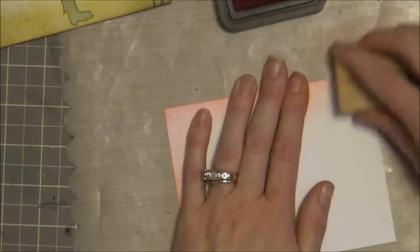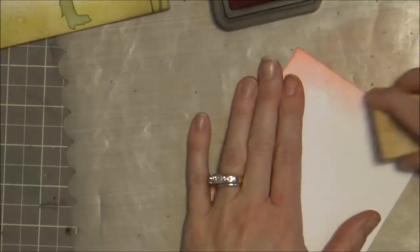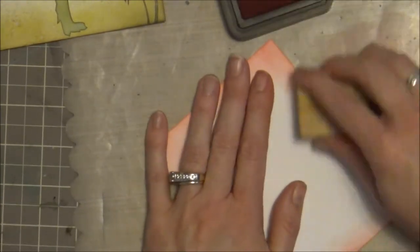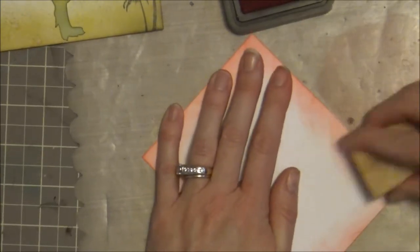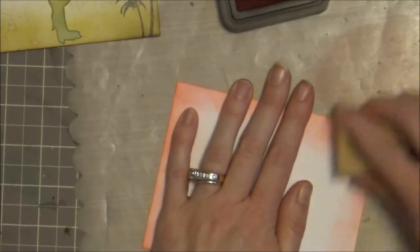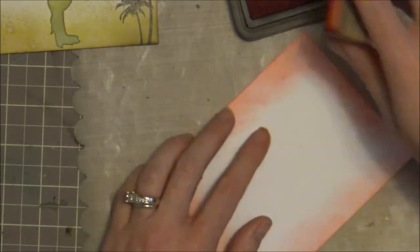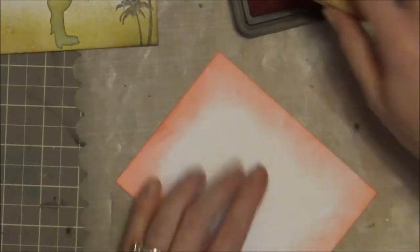But I want to make sure it doesn't ease out, eek out from underneath him, especially when you're using the distress ink markers, because they're water, liquid reactive, they can react to the adhesive if you get that everywhere, which I know because I've done.